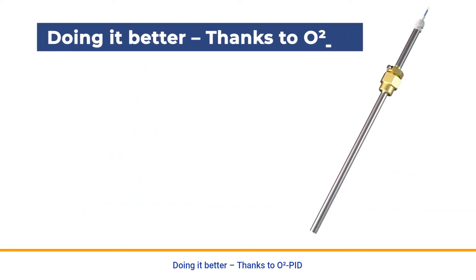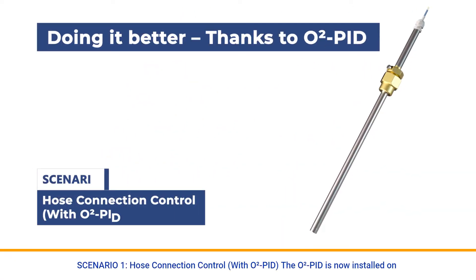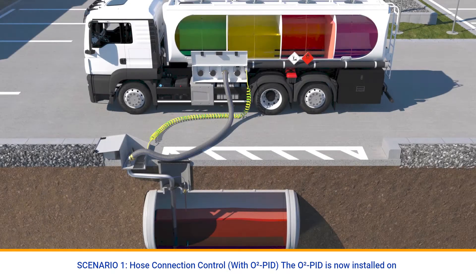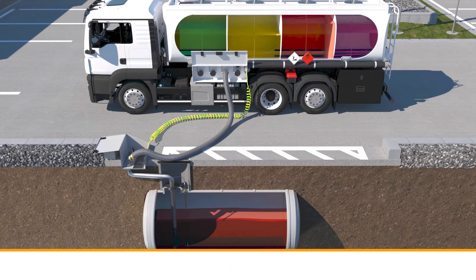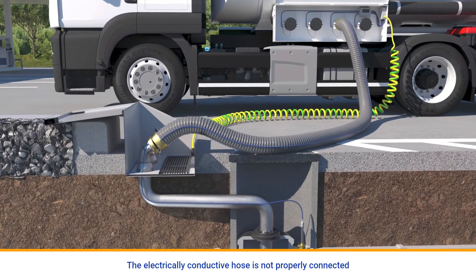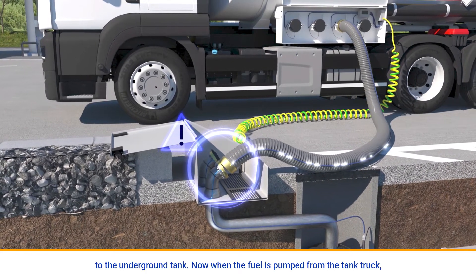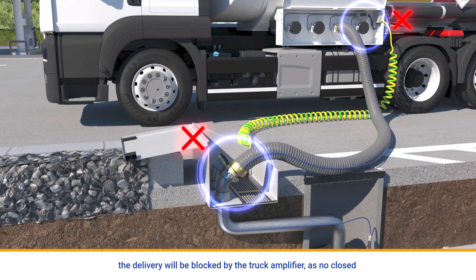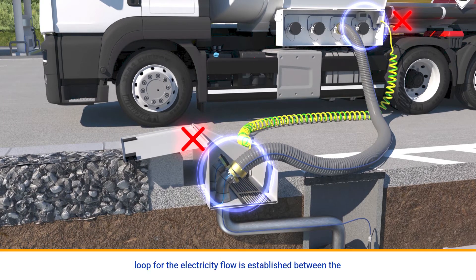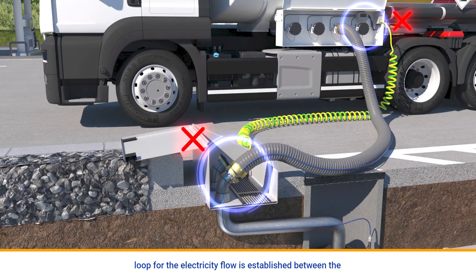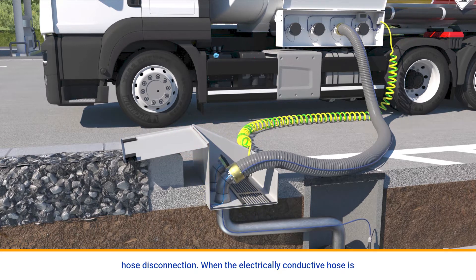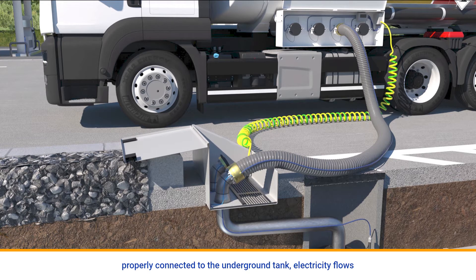Doing it better — thanks to O2PID. Scenario 1: Hose connection control with O2PID. The O2PID is now installed on the tank with proper electrical connections to the underground tank delivery inlet. The electrically conductive hose is not properly connected to the underground tank. When the fuel is pumped from the tank truck, the delivery will be blocked by the truck amplifier, as no closed loop for electricity flow is established between the truck amplifier and the delivery inlet, indicating a hose disconnection.